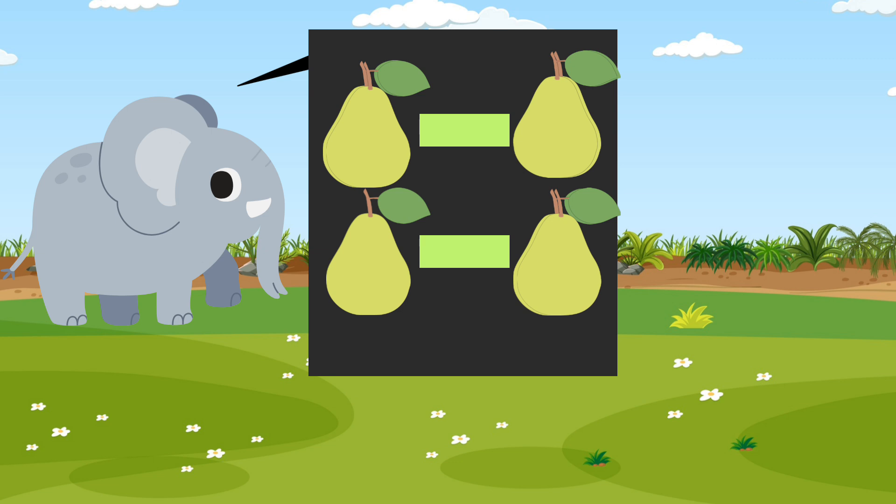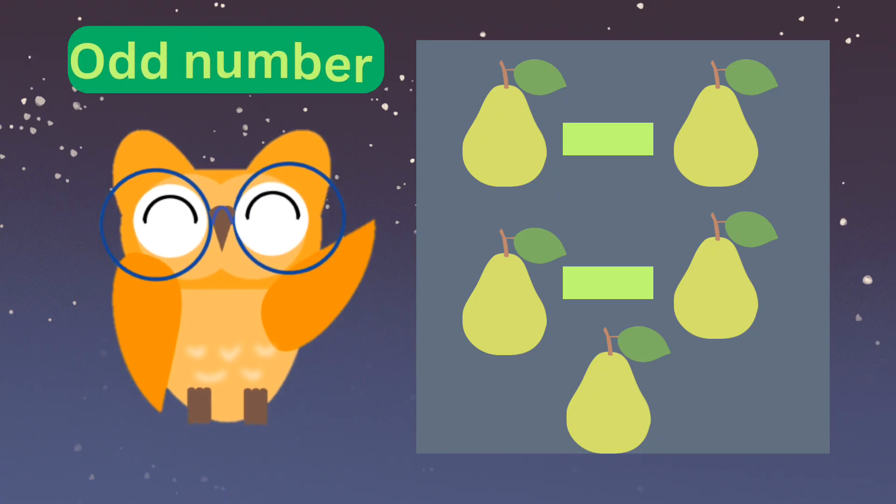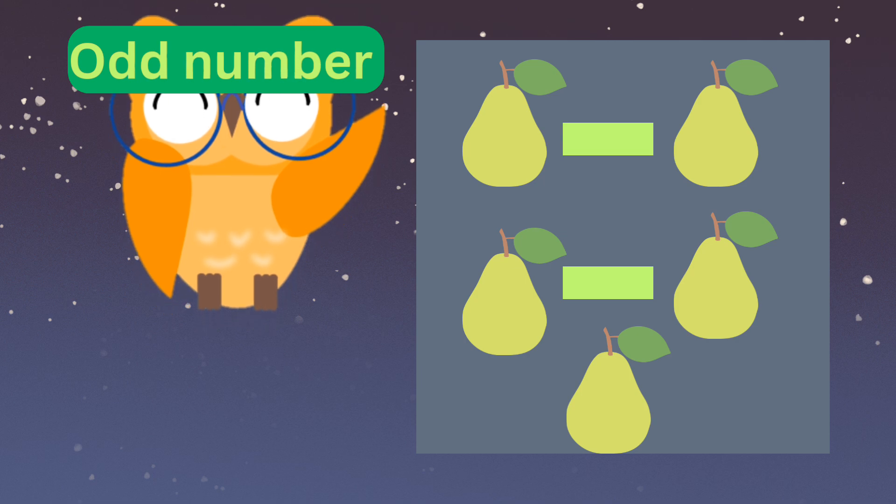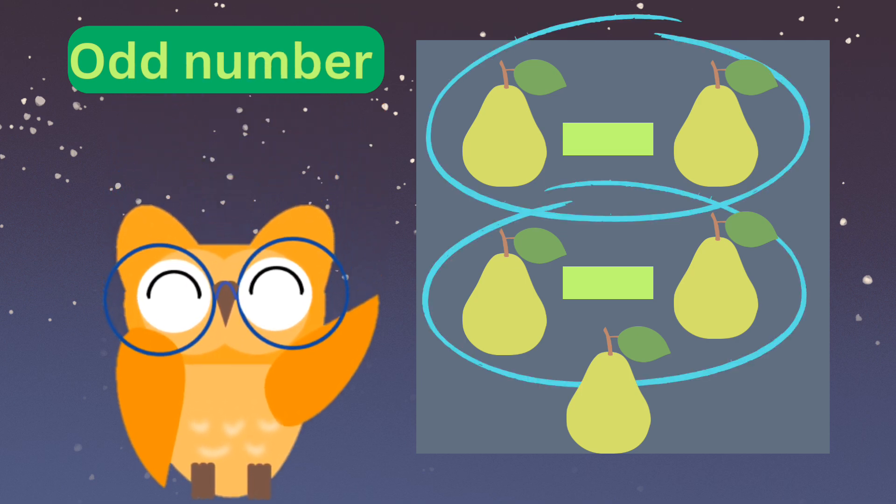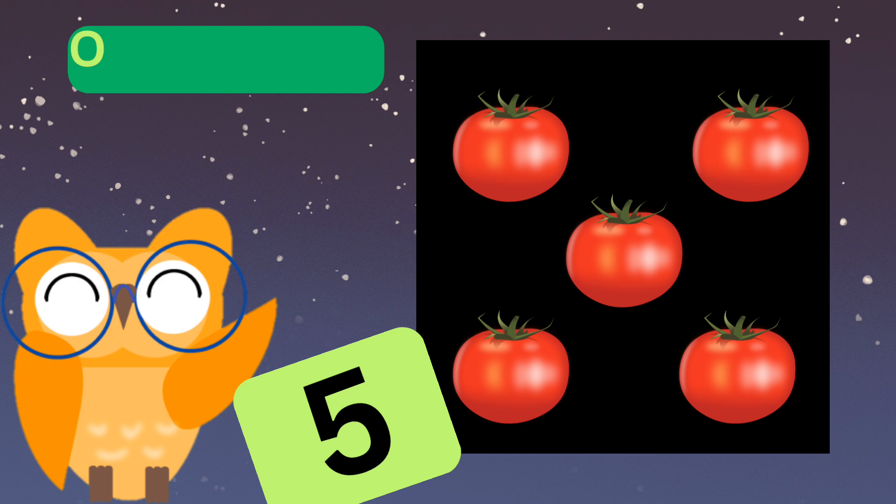Let's look at odd numbers with my friend Ollie the Odd Owl. Of course, odd numbers are a bit tricky. Odd numbers can be paired into groups of two, and there is always one left over.